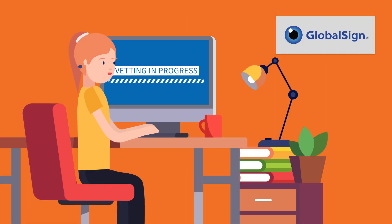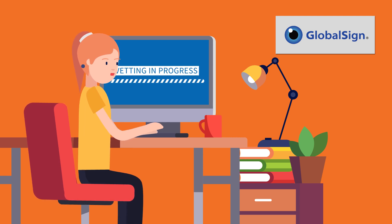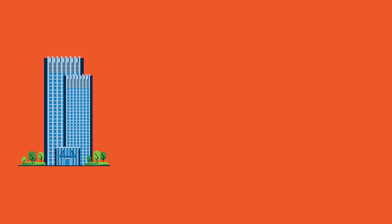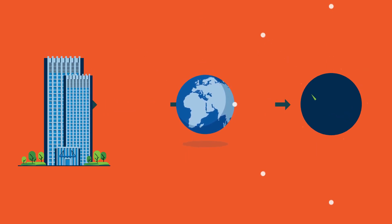Depending on which of these types is needed, the vetting procedures will differ. GlobalSign will verify the organisation by using a known verification method specific to the country or global area where the request is being made.